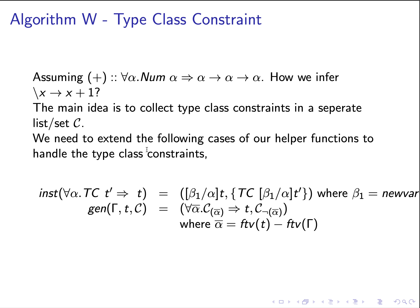For example, we need to extend the inst function to handle the instantiation of a for-all type scheme that carries a type context, written as TC T-prime. When we instantiate, we look for a new unification type variable beta-one that replaces alpha not only in T but also in the type context.